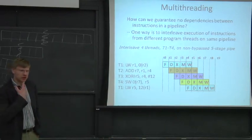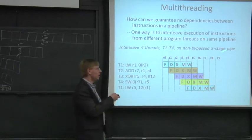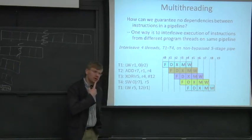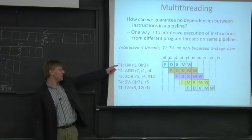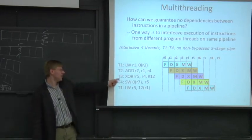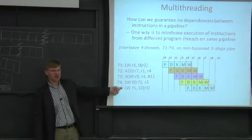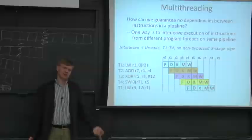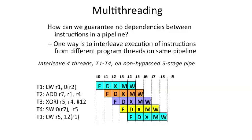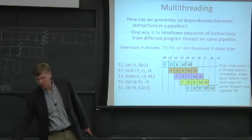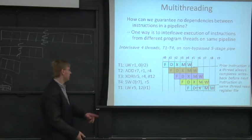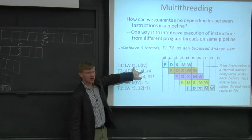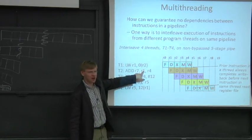One of the nice things about multithreading that you can take advantage of is that you don't have to worry about bypassing anymore. Because if you know that you're not going to be executing an instruction from the same thread until a couple cycles later, why do you need to have a fast bypass from the ALU back to itself? You just don't care. So here's an example of this. You have a write to R1 and then a read of R1. What value does this thread 2 get here?